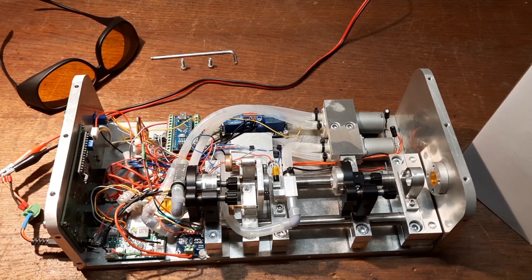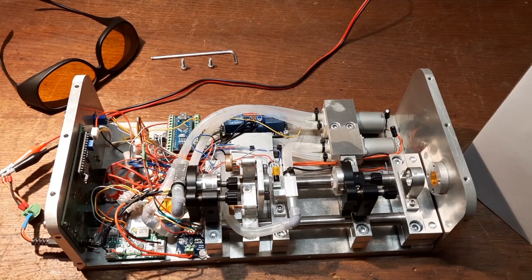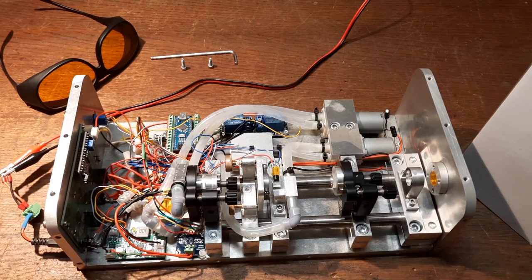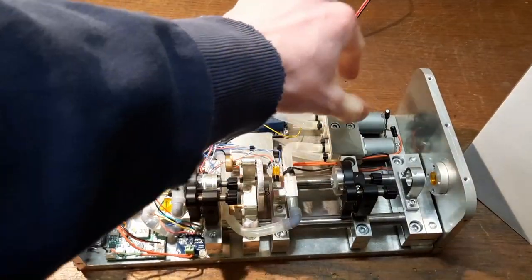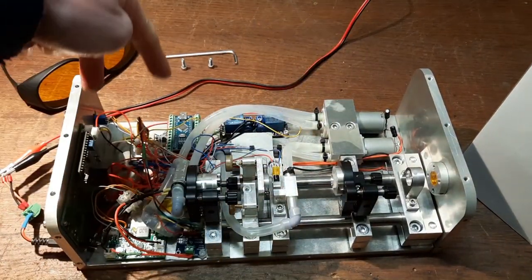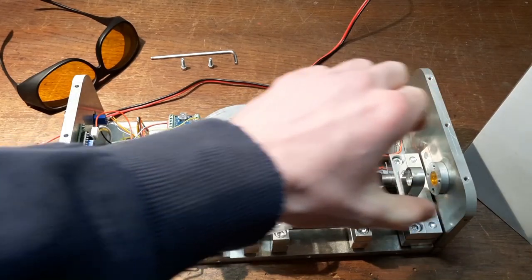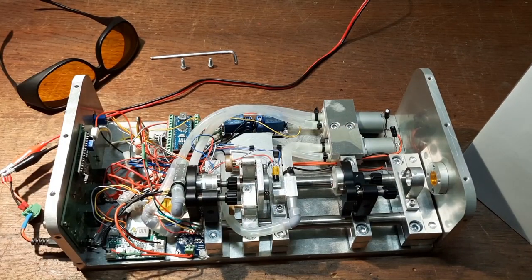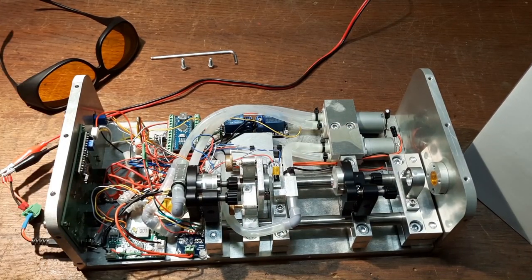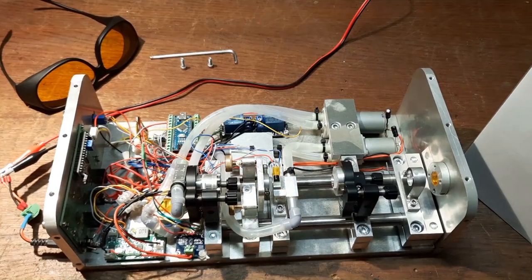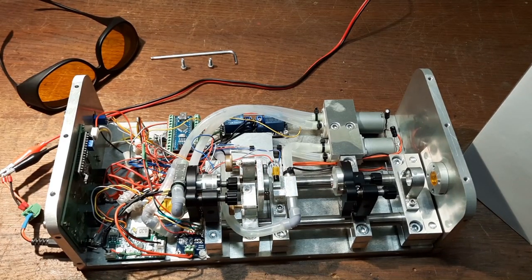We can break this whole thing down into three main compounds, basically. We've got the water cooling system in here, we've got the electronics in here, and we've got the optics in here. Now I will very briefly talk about the electronics and the water cooling system, because I think the optics is the most interesting part.